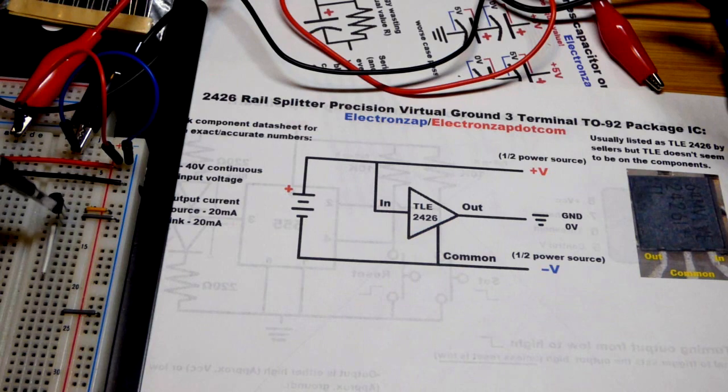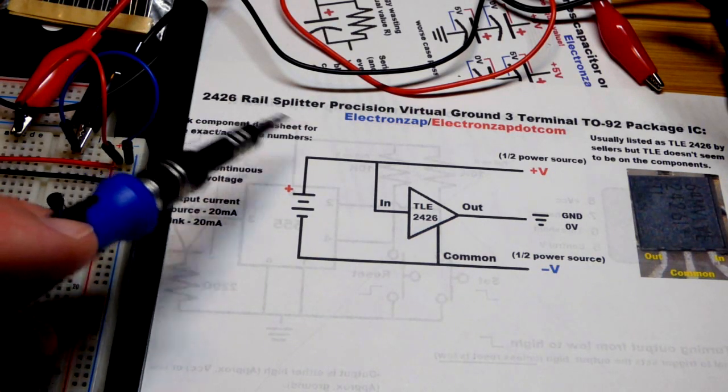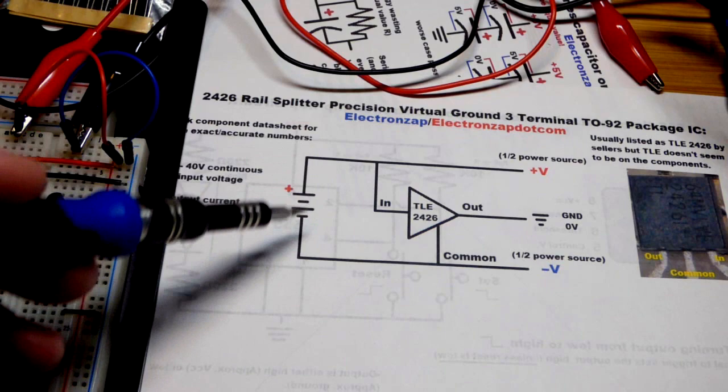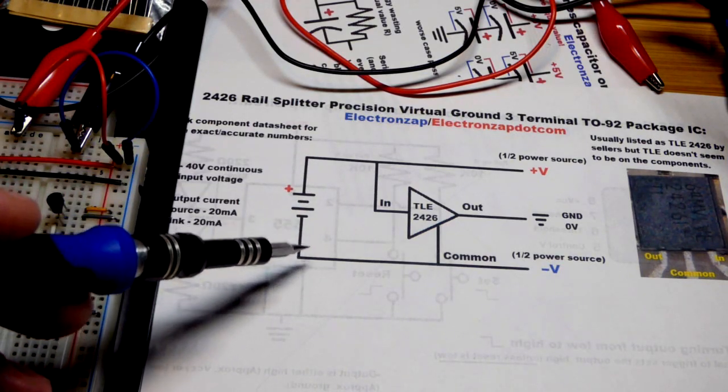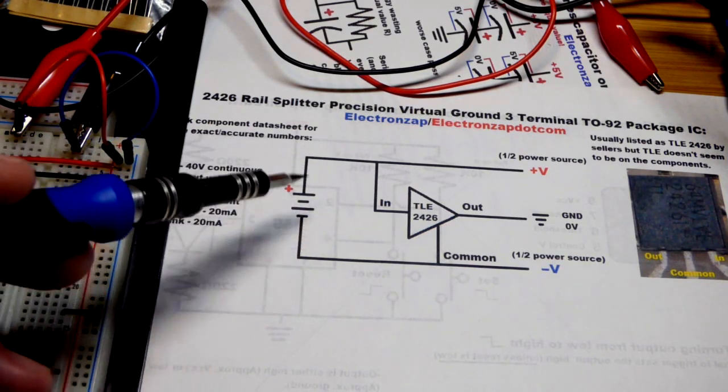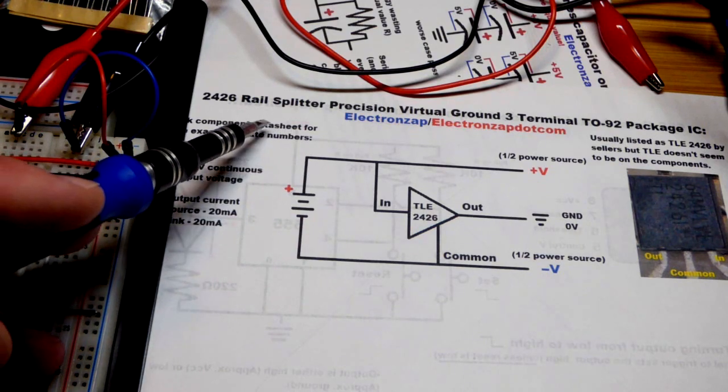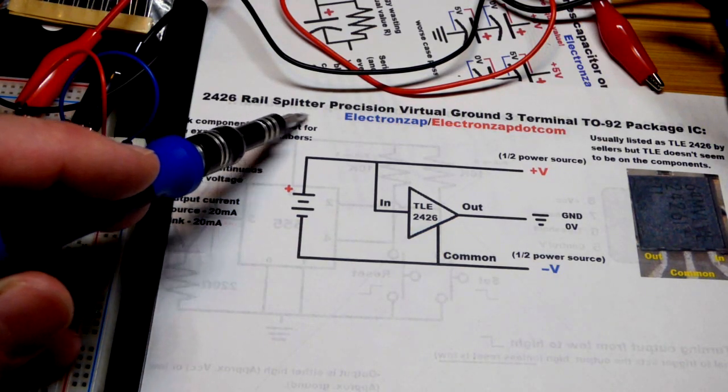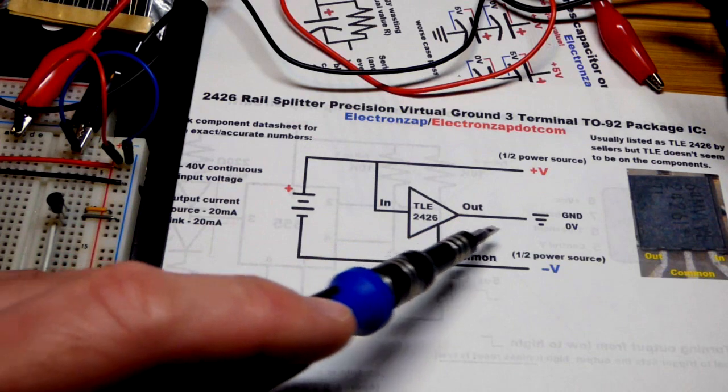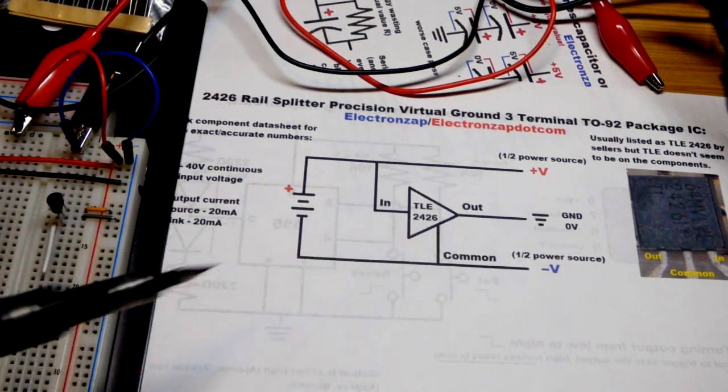What this component does is take the rail voltage—whatever we supply. In this case I put a battery schematic symbol, but any voltage source works as long as it can handle the power you demand of it. It takes the rail voltage and splits it to give us a virtual ground.